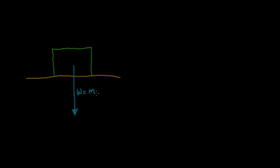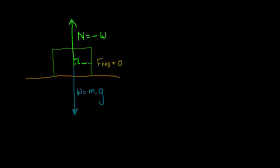Let's look at a normal slope - a horizontal surface with an object on it. That object has a weight acting downward, and we know that weight can be calculated by taking the mass of the object multiplied by gravitational acceleration. We also notice that this object is not moving, which means the resultant force is equal to zero. There must be another force acting against the weight - this is the force offered by the surface, called the normal force, capital N. It is the same in magnitude as W but in the opposite direction - in other words, negative W.